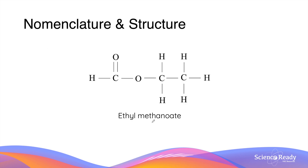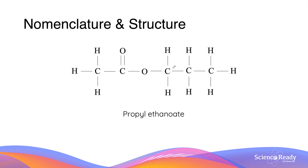Here are a few more examples. In this ester, there are two carbon atoms in the alcohol part and one carbon atom in the carboxylic acid part, so the name is ethyl methanoate. In this ester, there are three carbon atoms in the alcohol part and two carbon atoms in the carboxylic acid part, so the name is propyl ethanoate.